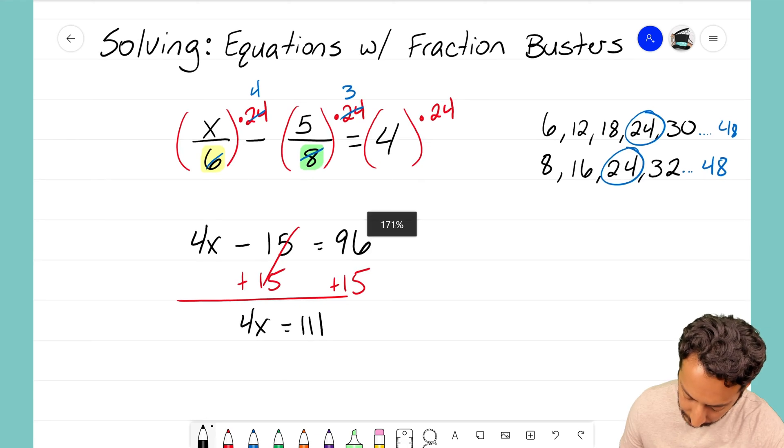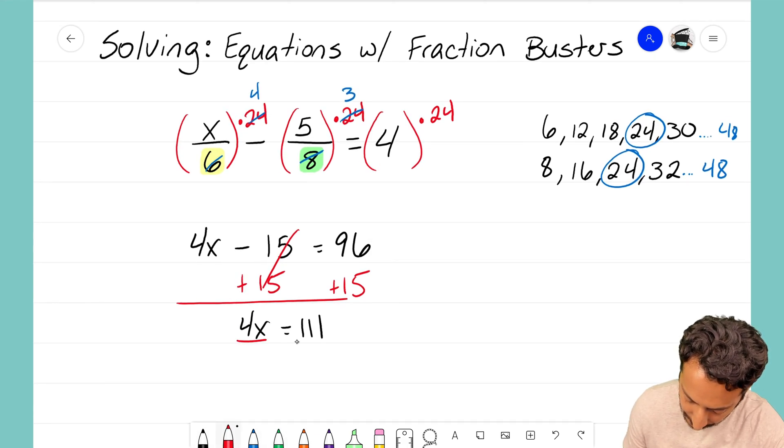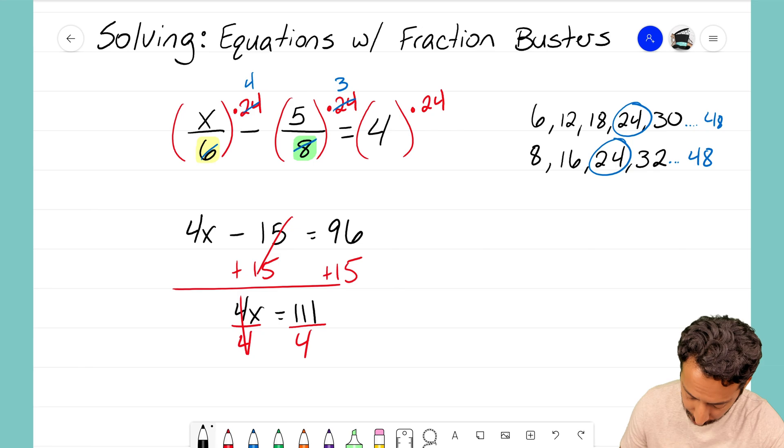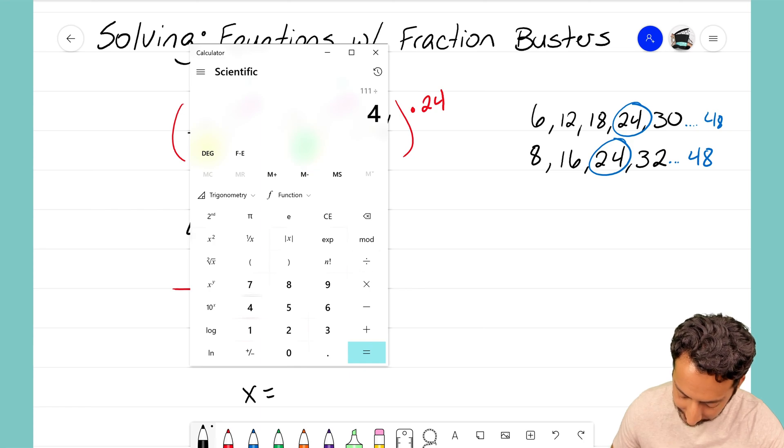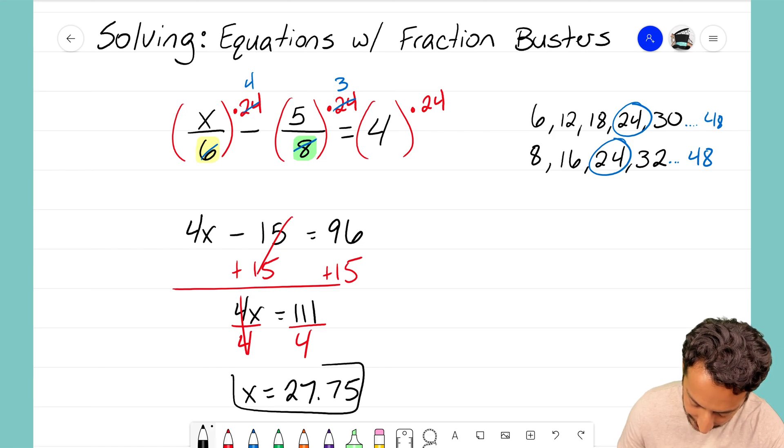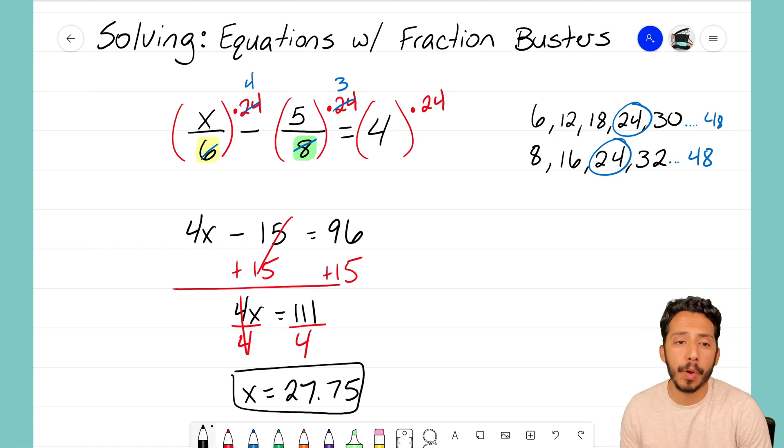Trying to get x by itself, so I think we need to divide both sides by four. By dividing both sides by four, the fours on the left-hand side cancel out and we are left with just x equals 111 divided by four. Let's break that calculator out one more time: x equals 27.75. That is the answer for